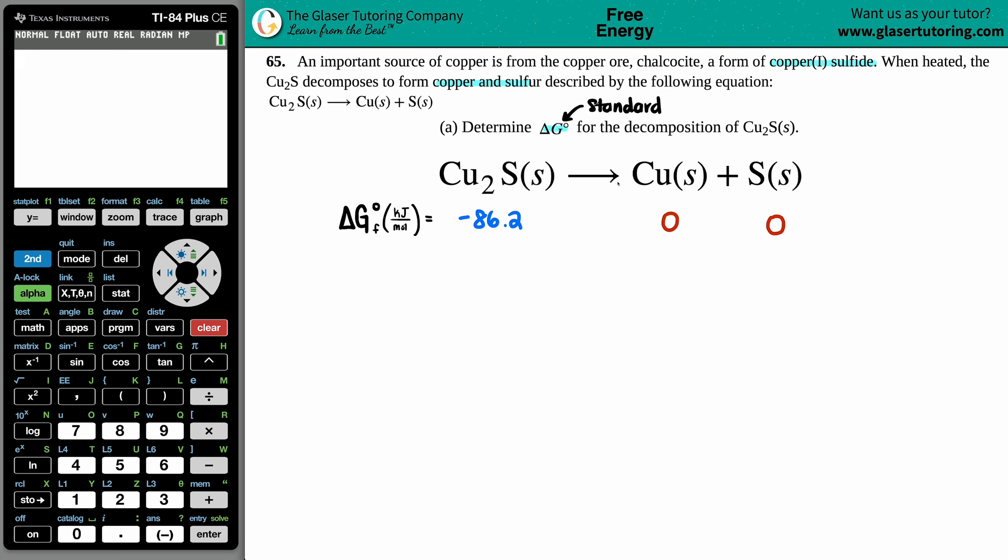Now what am I going to do with these values? Well, the formula for the overall ΔG is this formula right here: ΔG of the whole entire reaction equals the sum. So all we have to do is add up all the products and subtract by the sum of all the reactants.